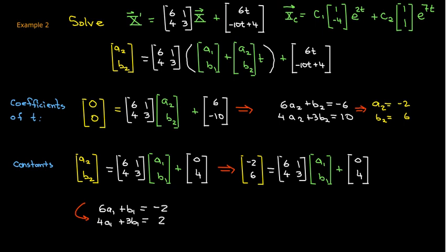You can use elimination, substitution, Kramer's rule, Gaussian elimination, whatever you're comfortable with. And your result is that a1 is negative 4 7ths and b1 is 10 7ths.